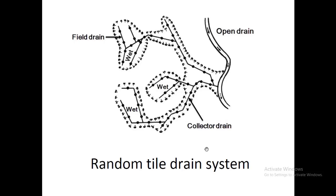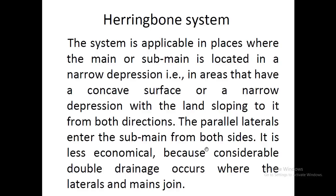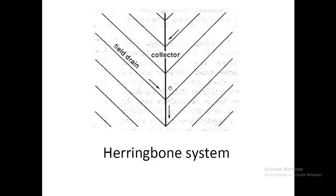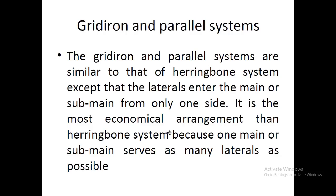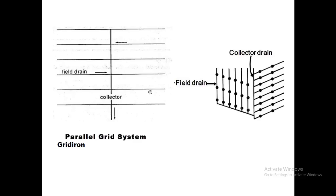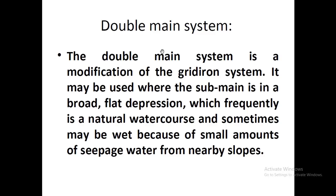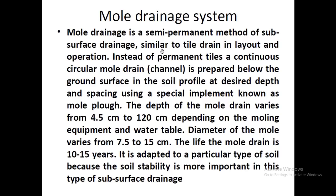In tile drainage we have the random system, shown with its layout. Then there is the herringbone system, which is applicable where the main or sub-main is located in a narrow depression — this layout is also shown. The gridiron and the parallel system are similar to the herringbone system, except that laterals enter the main or sub-main from only one side. These topics will be discussed in detail in upcoming lectures.